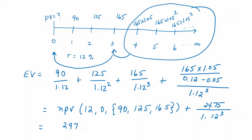The present value of the first three years will be $297.45 — I'm holding on to more digits in my calculator when I do that. The present value of that terminal value will be $1,761 million, adding up to an enterprise value of $2,059 million, or $2.059 billion.